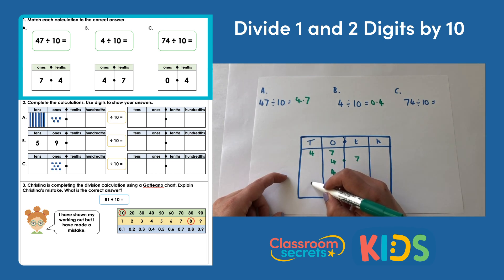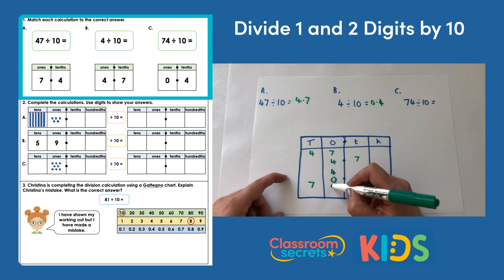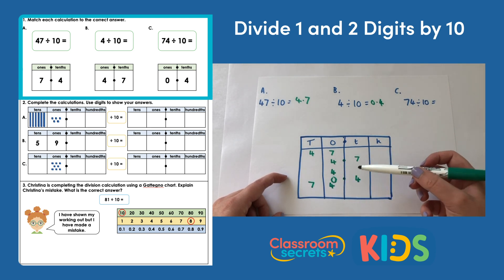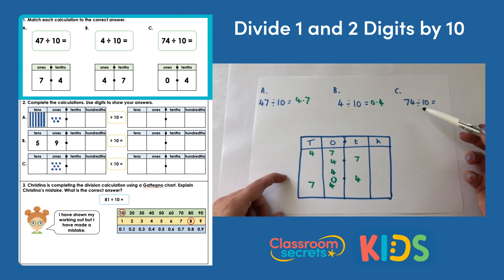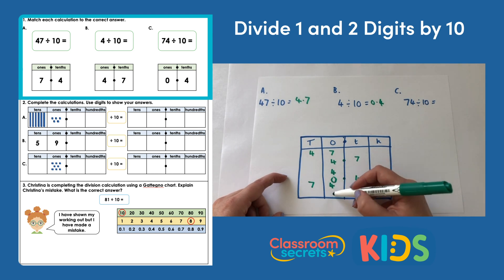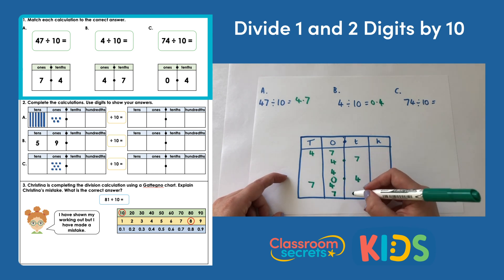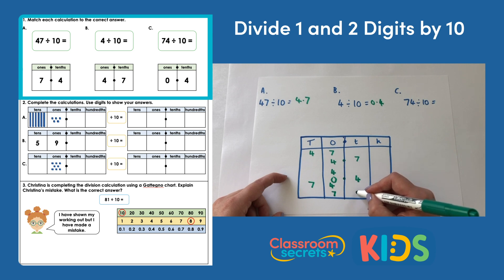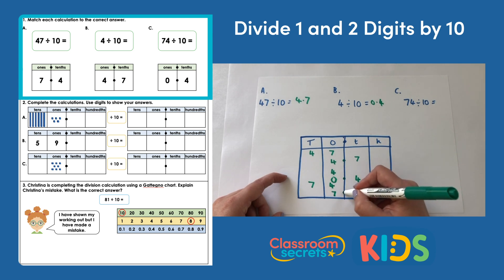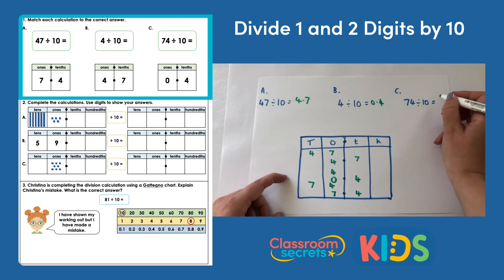Finally, we've got 74 — 7 tens and 4 ones. We're going to move each of those digits one place to the right. So we have 7 in our ones column, 4 in our tenths column. The decimal point goes in the middle and we have 7.4.